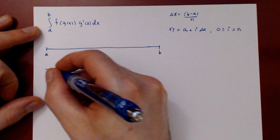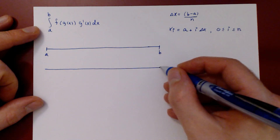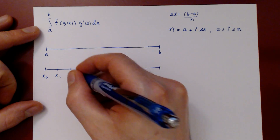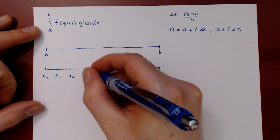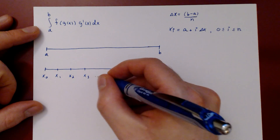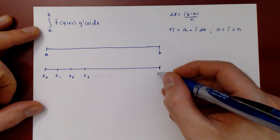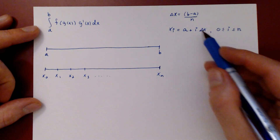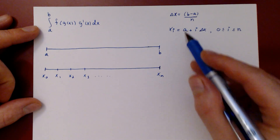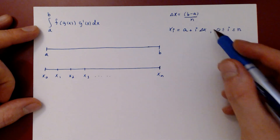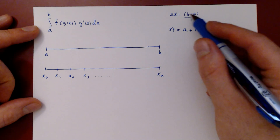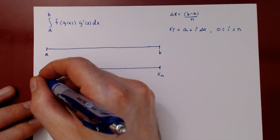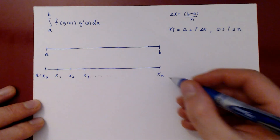We can rewrite the interval from x_0 to x_1, the first sub-interval, then x_2, x_3, and so on up to x_n = b. When i = 0, x_0 = a. When i = n, n times delta x gives b minus a, and a plus (b minus a) gives b. So a = x_0 and b = x_n.